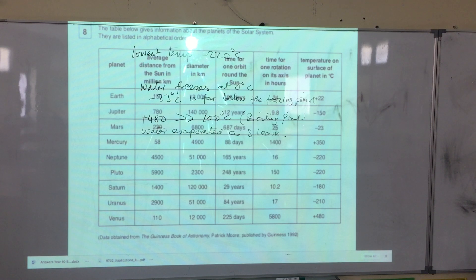The time for one orbit is 365 days, 12 years, seven days... Which one is the shortest and which one is the longest? This is how we use this kind of table.